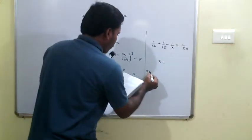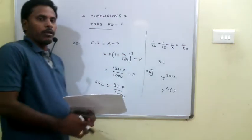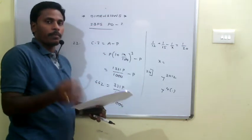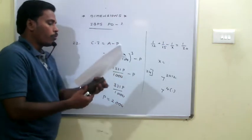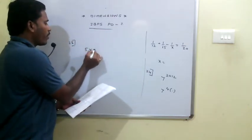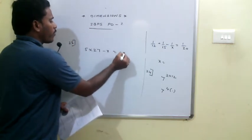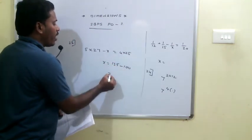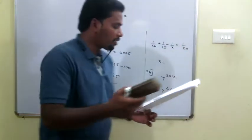Q24: The units digit of 7 to the power 2012. Since 2012 is a multiple of 4, and 7 raised to a multiple of 4 always ends with 1 (since 7⁴ = 2401), the answer is 1. Q25: The average of 5 numbers is 27, so their sum is 135. If one number is excluded, the average of the remaining 4 becomes 25, so their sum is 100. The excluded number is 135 minus 100, which is 35.